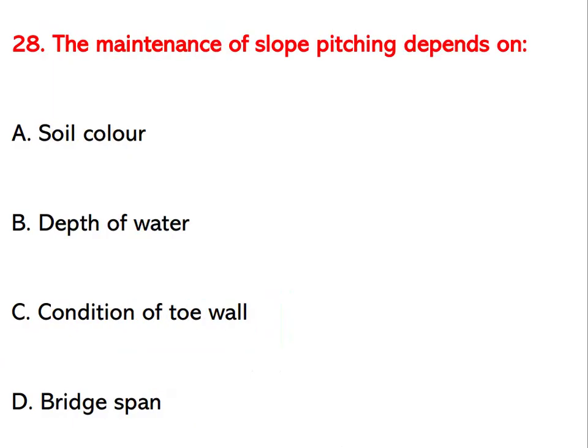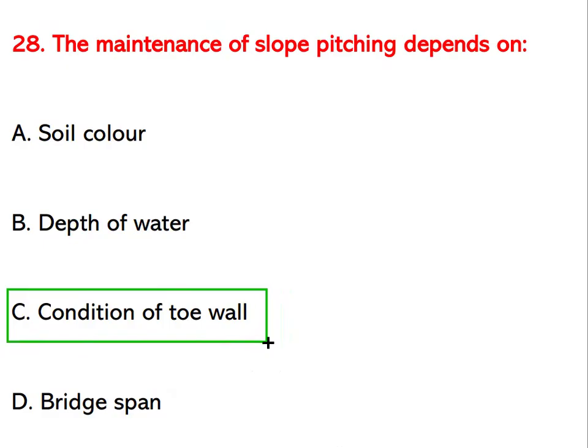The maintenance of slope pitching depends upon which factor? Options are soil color, depth of water, condition of toe wall, or bridge span. The right answer is condition of toe wall.